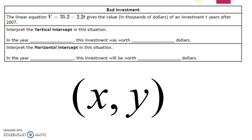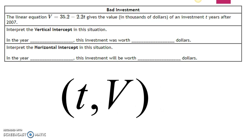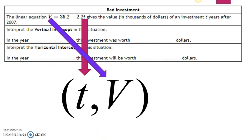Sometimes our equations have variables besides x and y. In this equation, we have a V and a t. We have to identify which variable goes in the x spot and which variable goes in the y spot. So in this particular equation, instead of x comma y, we have t comma v. The t variable is in place of the x spot and the V variable is in the y spot.